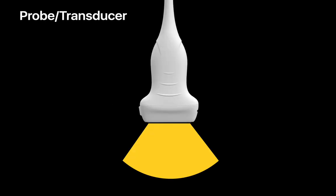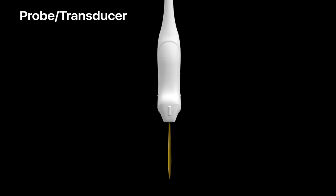Most ultrasound probes emit an almost two-dimensional fan-like beam. You'll usually find a marker or indicator on one edge of the probe, and we refer to this edge of the probe as its indicator edge.